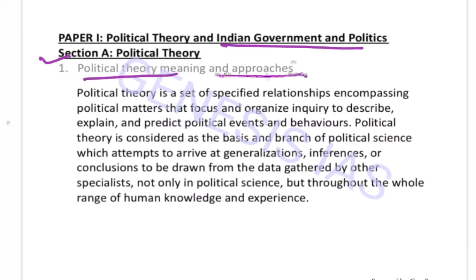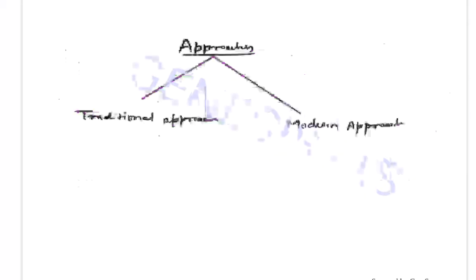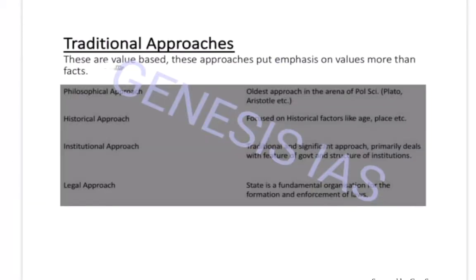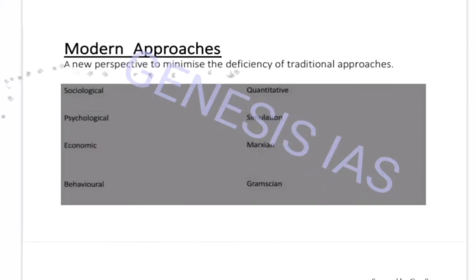Political Theory: Meaning and Approaches. Here the definition of political theory is given; we will discuss more about it in later videos. There are two approaches: the Traditional Approach and the Modern Approach. The traditional approach is a value-based approach that puts emphasis on values more than facts. In the modern approach, it is a new perspective aimed at minimizing the deficiencies of the traditional approach.